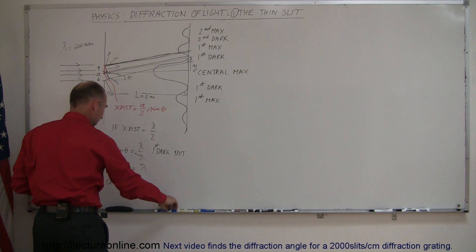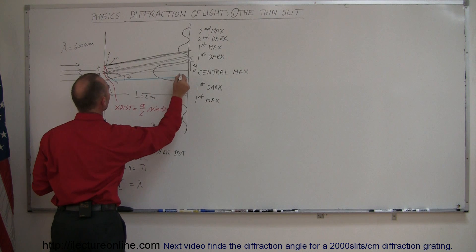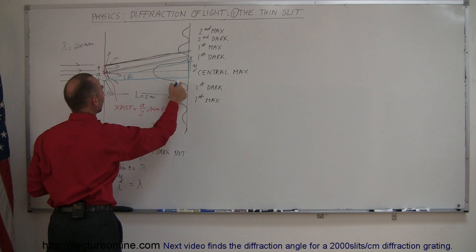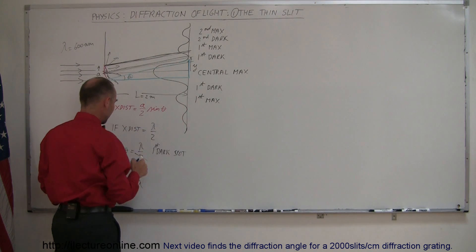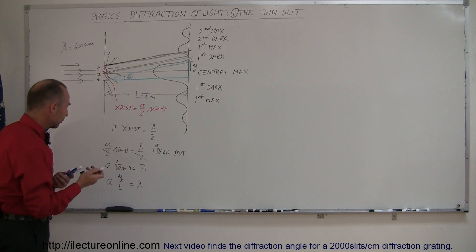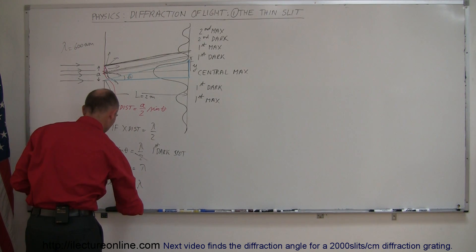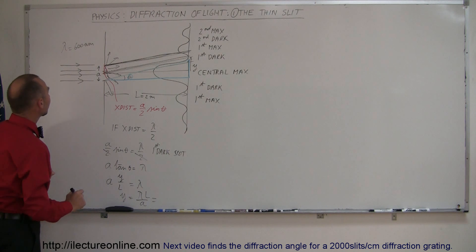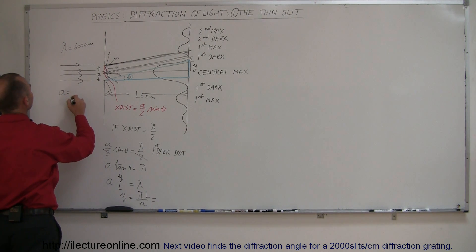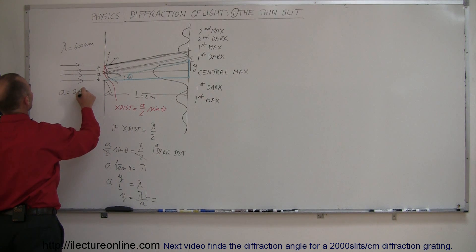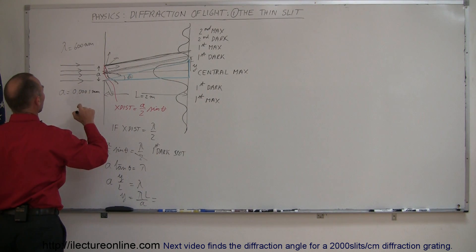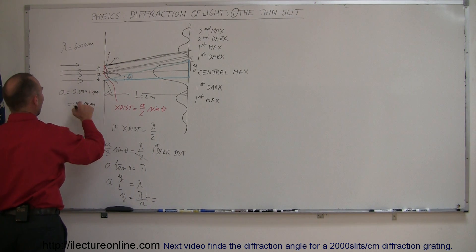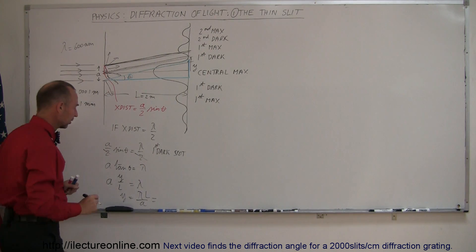I'm looking at this triangle here — in blue — here's the angle theta, here's the opposite side y, here's the adjacent side L, so the tangent of theta is y over L. Solving for y, we get y equals lambda times L over a, where a is the width of the slit. Let's say a equals 0.1 millimeter, or 0.0001 meters, and we plug the numbers in.